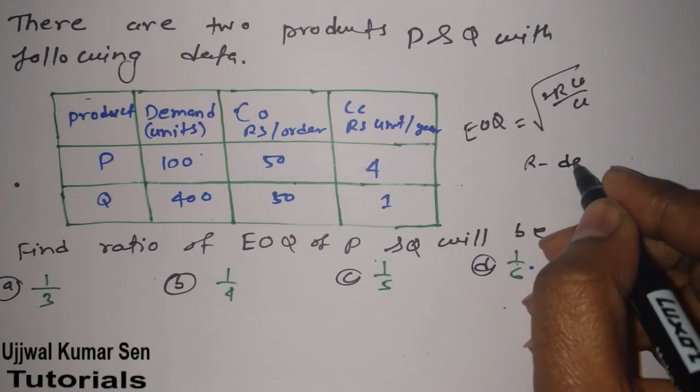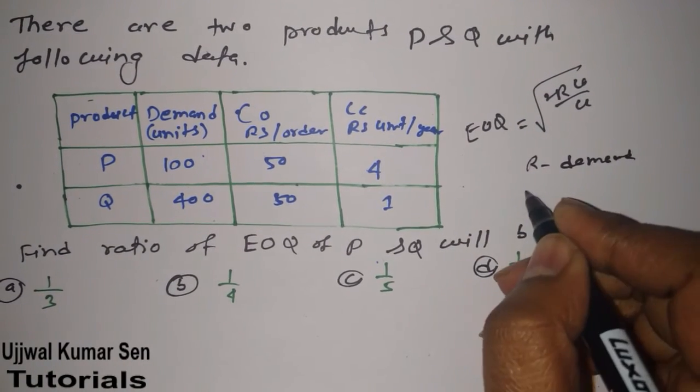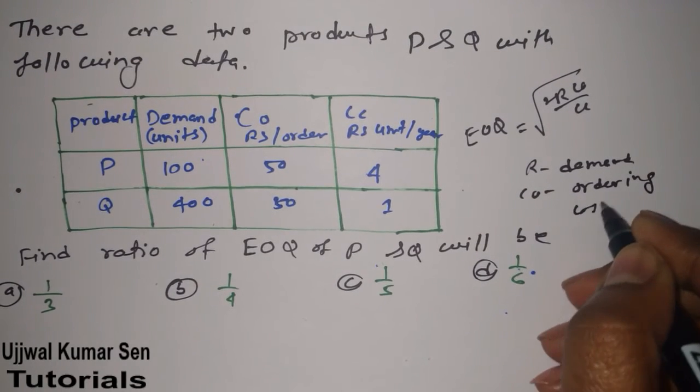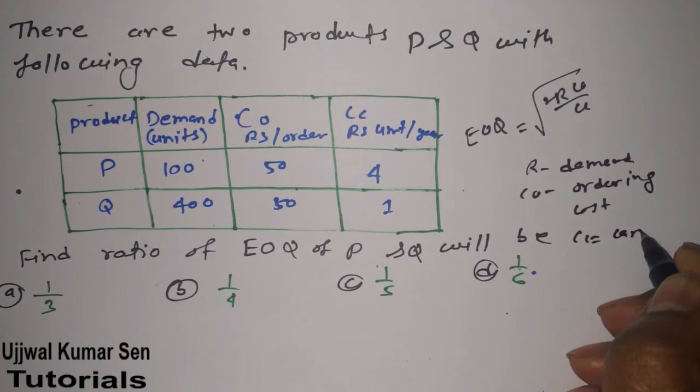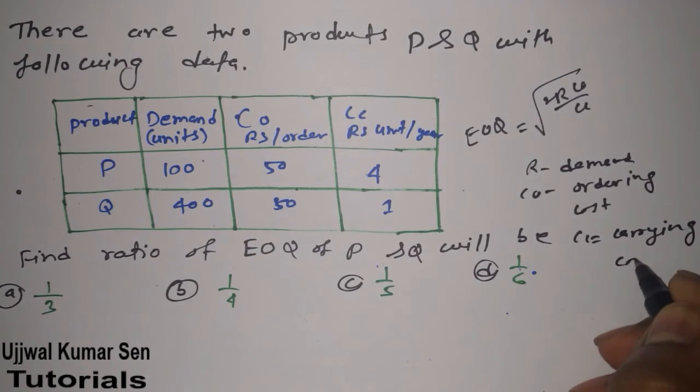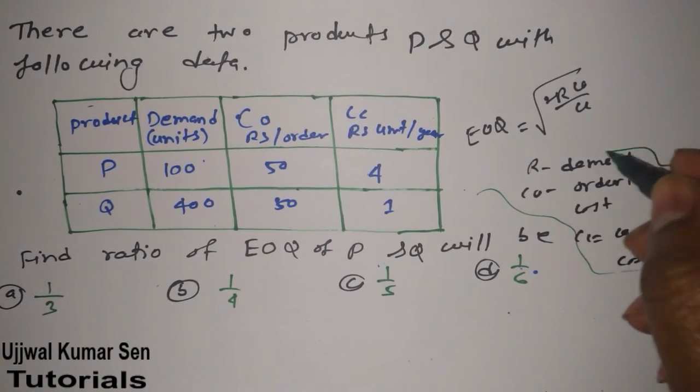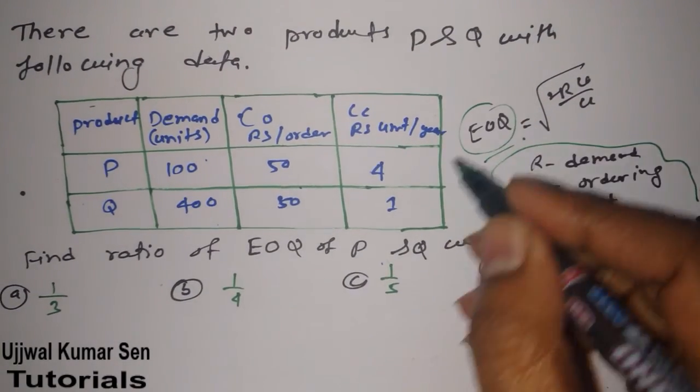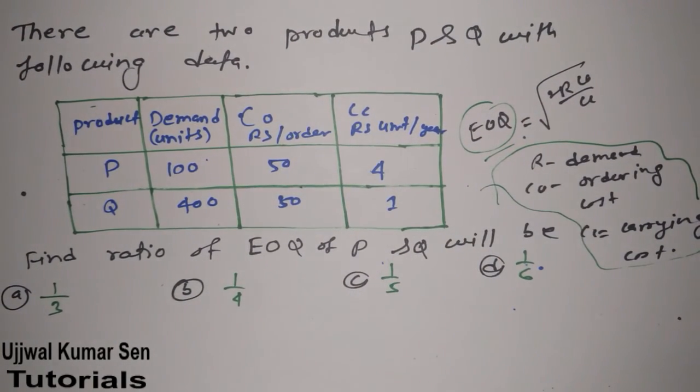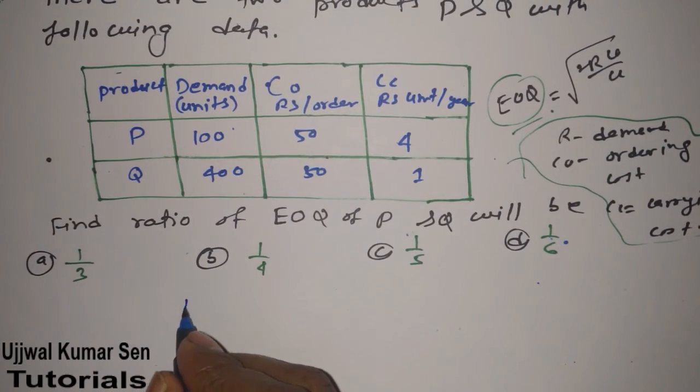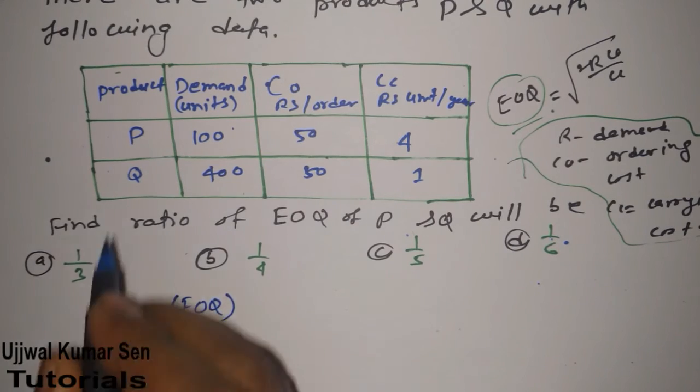So here R is demand, C naught is ordering cost, and CC is carrying cost. So this is all about this formula and EOQ. What is the formula of EOQ? Economic order quantity. Now what we have to find out is EOQ. So we will find out first EOQ for P.